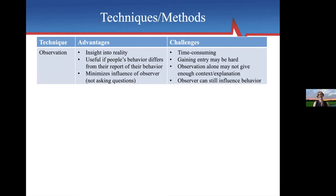Let's talk about some of the methods we can use to get our data. Observation is a method with some advantages: when we observe people, we actually see reality, and it's useful because we can see if people's behavior differs from how they report their behavior. We try to minimize the influence of the observer because we're not asking questions. But the problem is we're also not getting their perspective — we're only getting their behavior. It can be time consuming, and observation alone doesn't often give us enough context to know exactly what's going on.